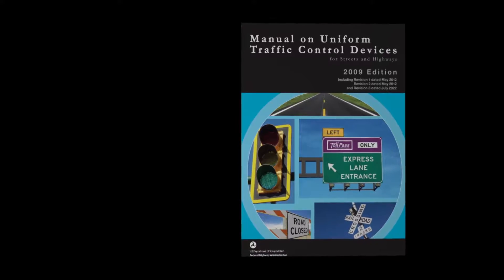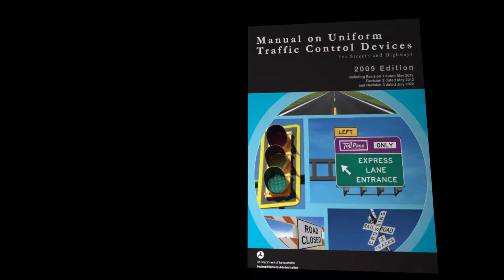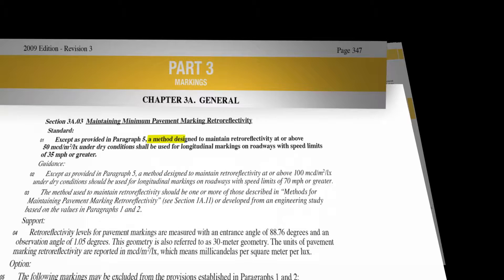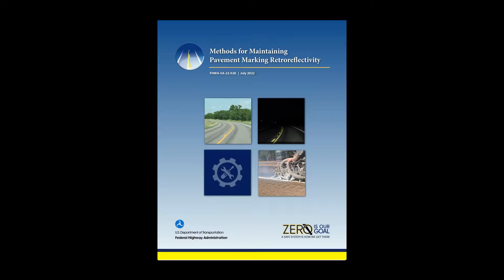The Manual on Uniform Traffic Control Devices, or MUTCD, now requires the continued use of a method designed to maintain pavement markings at or above specific minimum retro-reflectivity levels. The MUTCD recommends using one or more of five methods described in detail in the FHWA publication titled Methods for Maintaining Pavement Marking Retro-Reflectivity. A link to this document is provided in the video description.